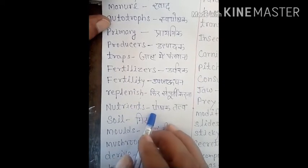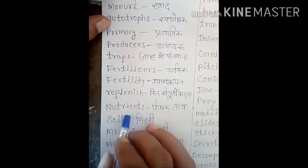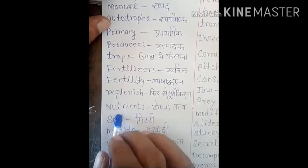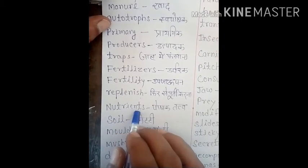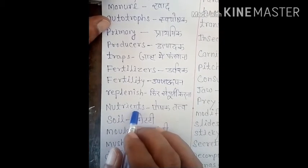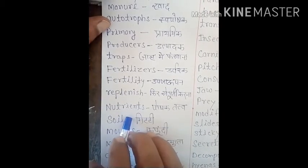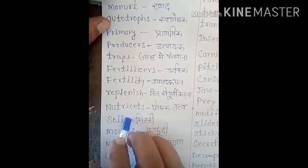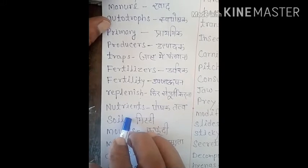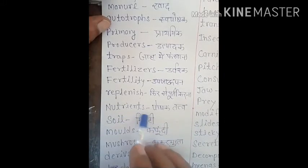Next word is 'nutrients', N-U-T-R-I-E-N-T-S — 'paushtik tatva' hote hain. Jaise hamaari jo diet hoti hai, us mein nutrients hote hain: carbohydrates, fat, protein, minerals, vitamins, roughage — yeh sab nutrients hain.